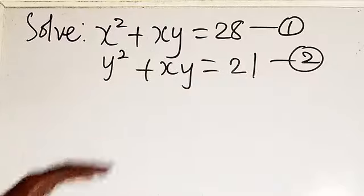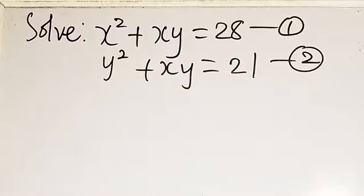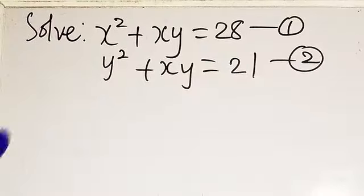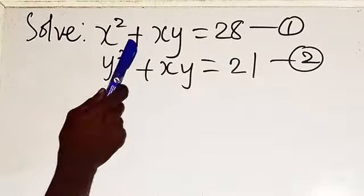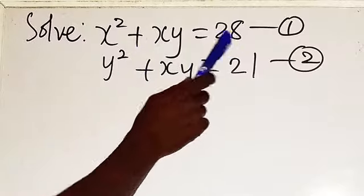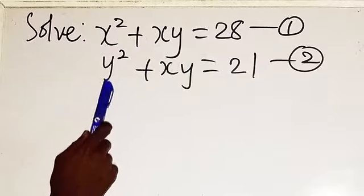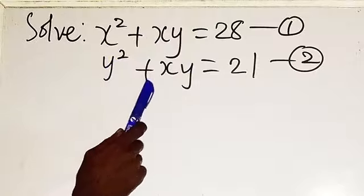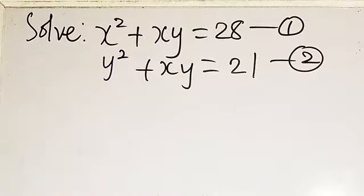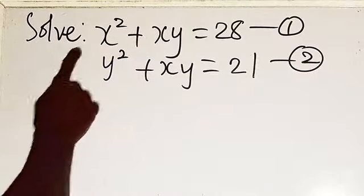We are going to be solving this system of equations. We have x squared plus xy equals 28, and y squared plus xy equals 21.